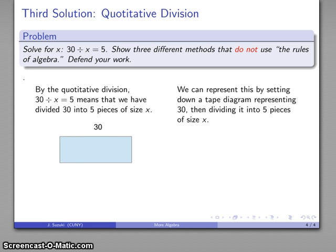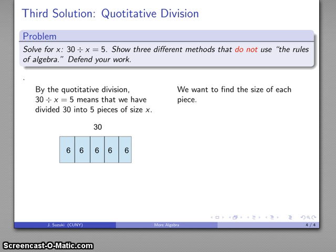I don't know how big those pieces are individually, but I can figure that out. Turns out each piece is of size 6. Check it out: 6, 12, 18, 24, 30. There's my tape diagram of 30: 1, 2, 3, 4, 5 pieces.